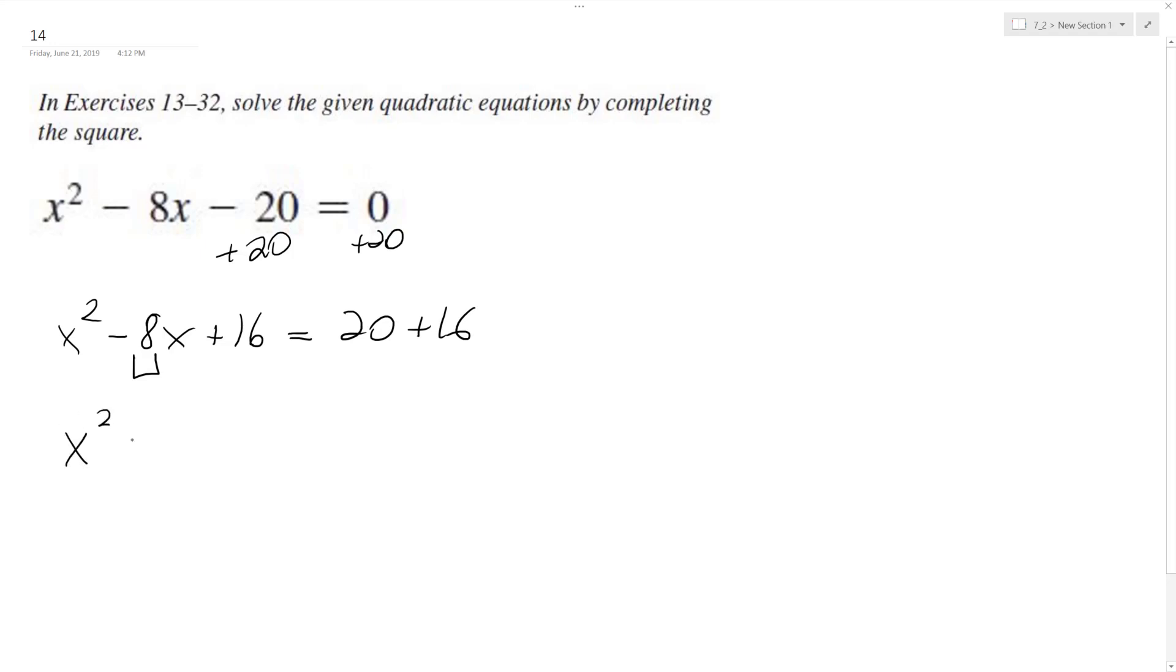We end up with x squared minus 8x plus 16, which can break down to x minus 4 squared. And on the right side we have 36, 20 plus 16.